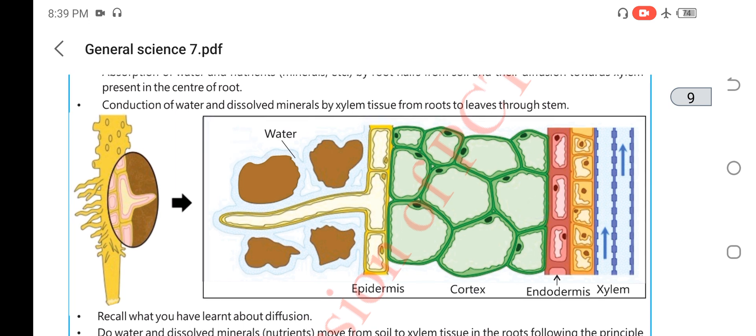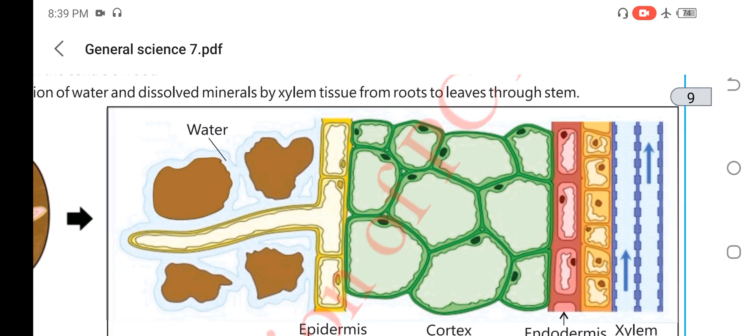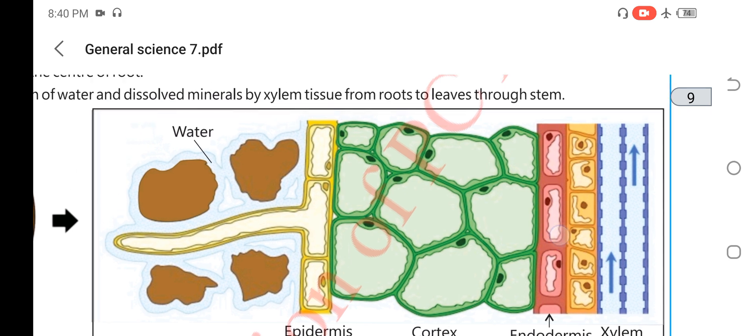Here the internal structure of the root is elaborated. Its broad view is shown. First, how root hairs absorb water from the xylem, and that xylem and phloem transfer water to the aerial parts.